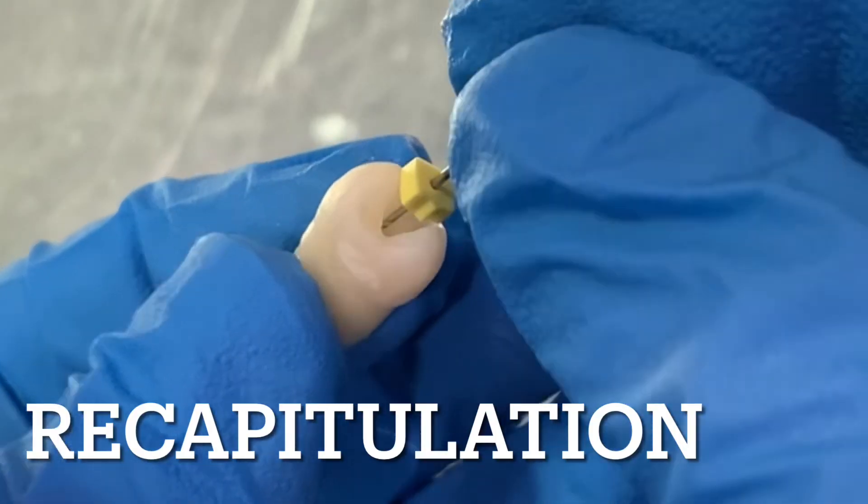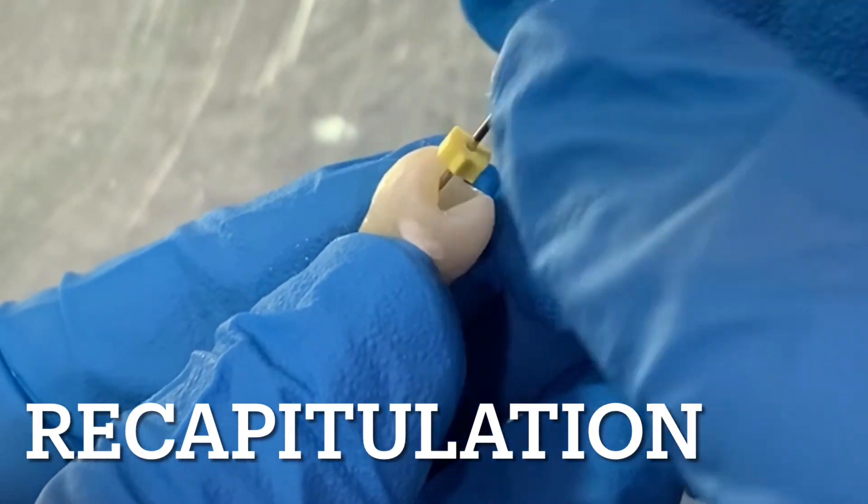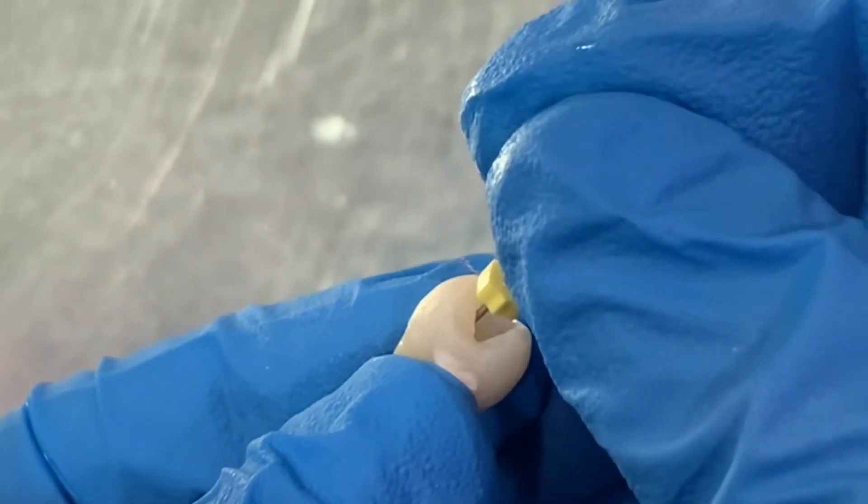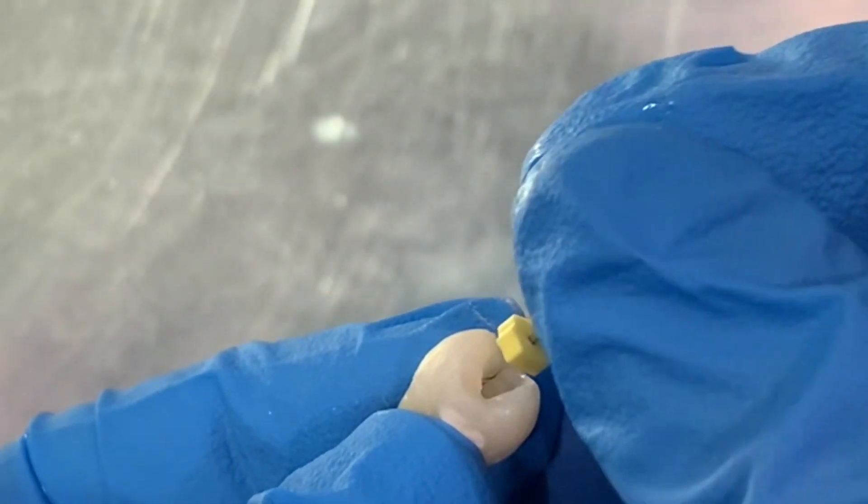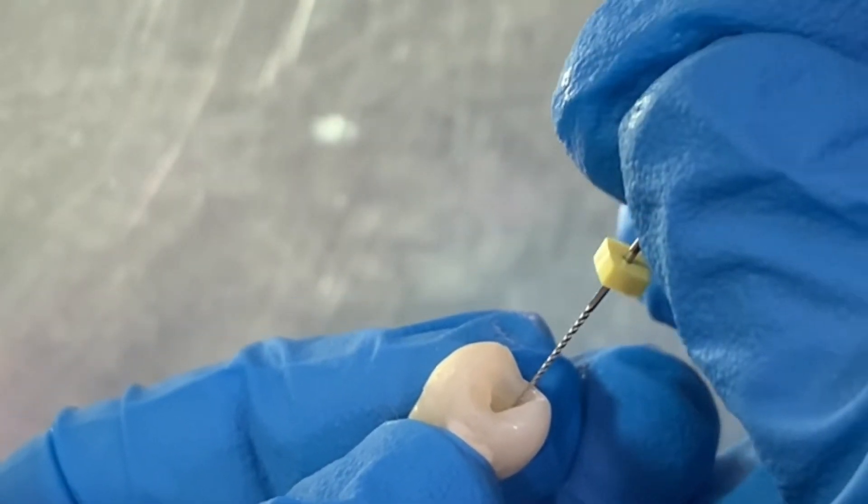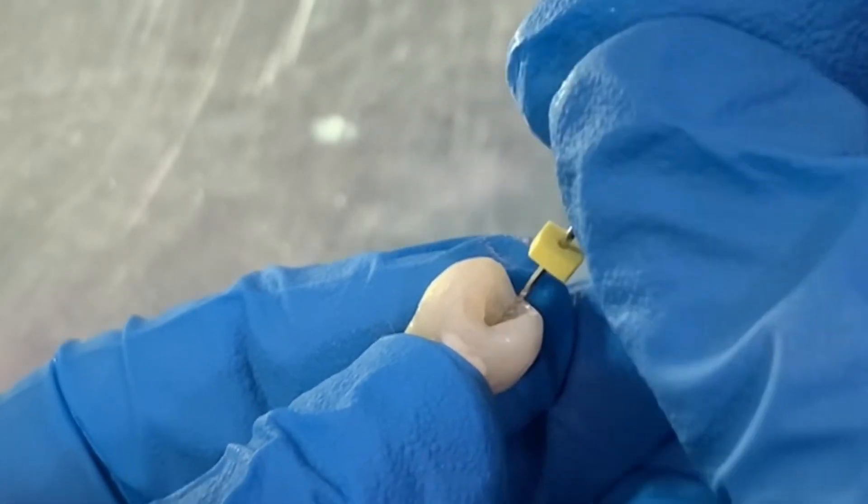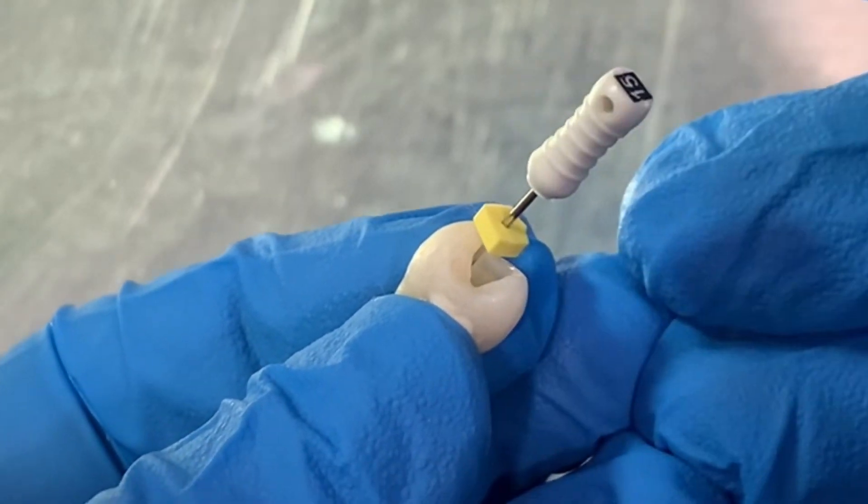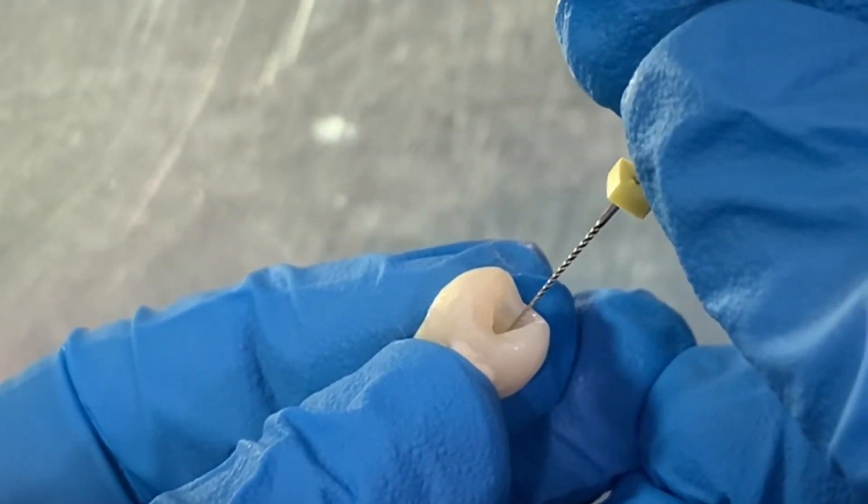We recapitulate with a 15 number file to break the debris and help to move in the irrigating solution.